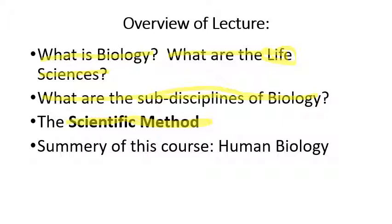But in a way, what he was saying was correct, because science — the word science — refers to a method. It simply refers to a method of finding out how the universe works. And that method involves doing experiments and making observations. Before we invented science as a discipline, we used to figure out how things work using intuition and observation. But to be a science, a subject has to be able to do experiments.